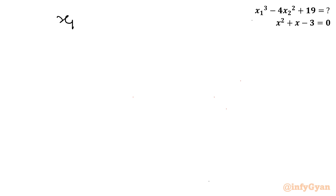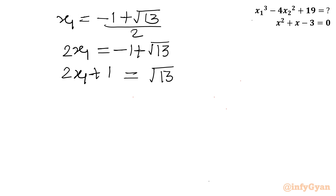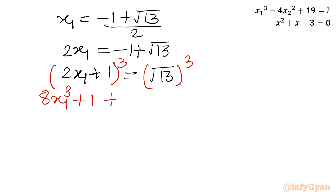With x1 = (-1 + √13) / 2, I write 2x1 = -1 + √13, so 2x1 + 1 = √13. Now I cube both sides: (2x1 + 1)³ = (√13)³. Expanding the left side using (a+b)³: 8x1³ + 1 + 3(2x1)(1)(√13) = 8x1³ + 1 + 6x1√13 = 13√13.